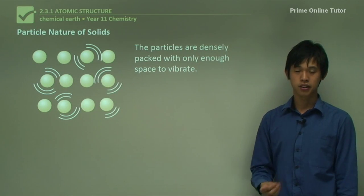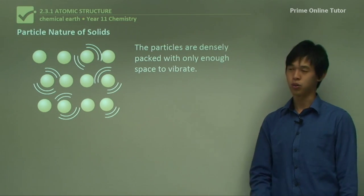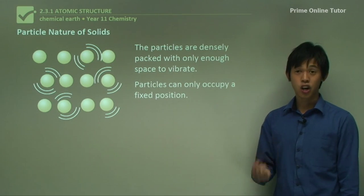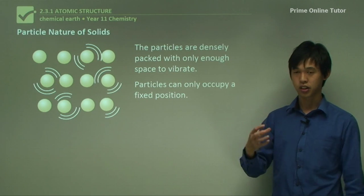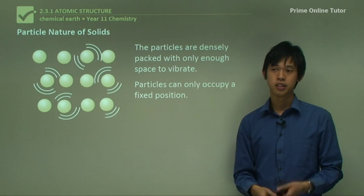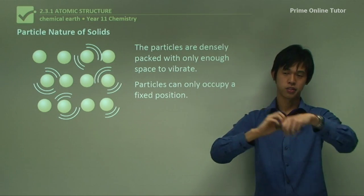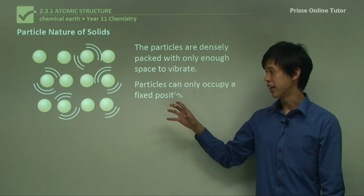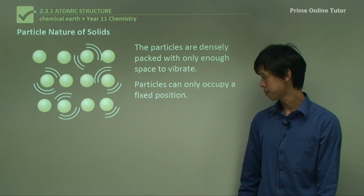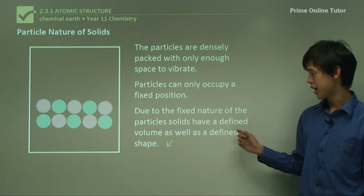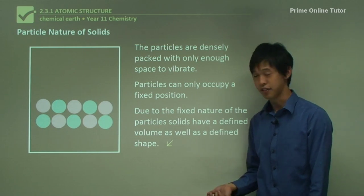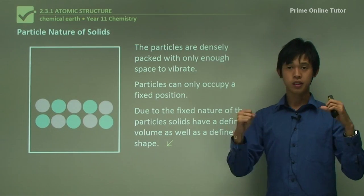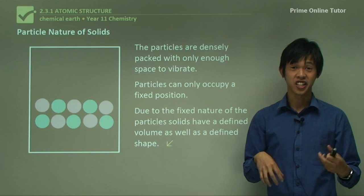There's only enough space for solid particles to vibrate — they can only shake left and right or up and down. Particles occupy only a fixed position because they're so close together, they can't swap places with one another. With liquids and gases, particles can interchange their positions, but with solids, because they're so tightly packed, there are only fixed positions for each particle. Due to these fixed positions, solids have a defined volume as well as a defined shape.